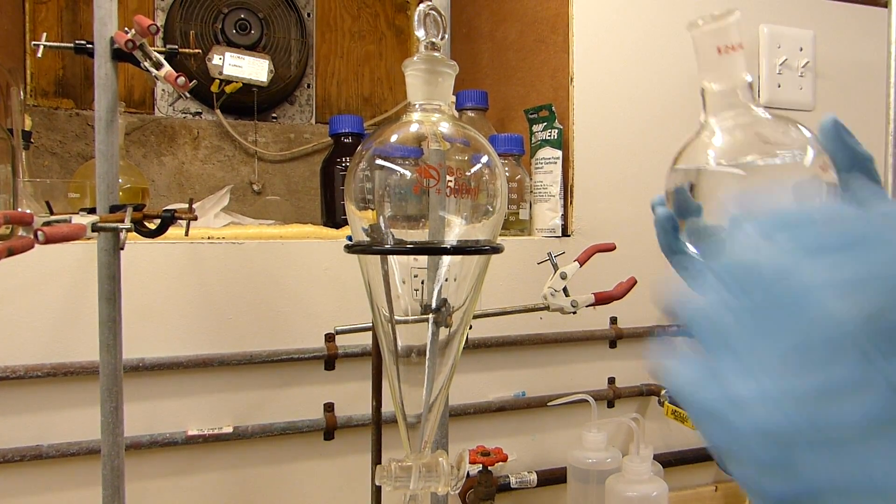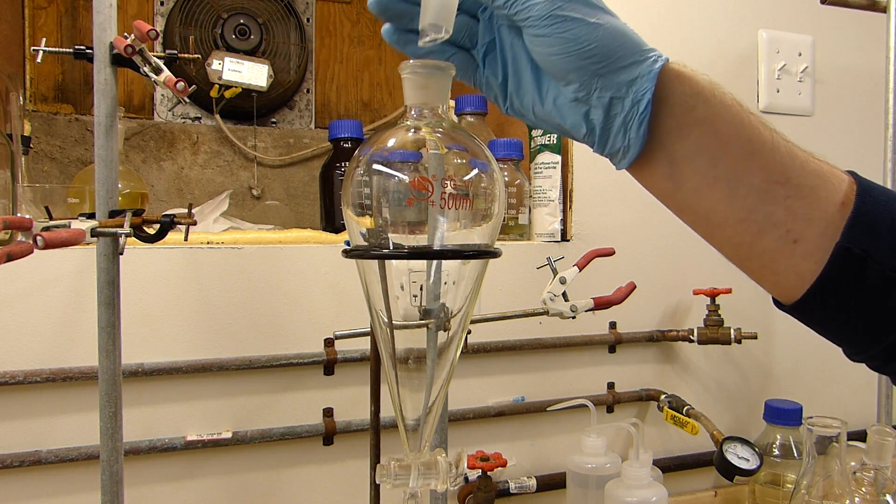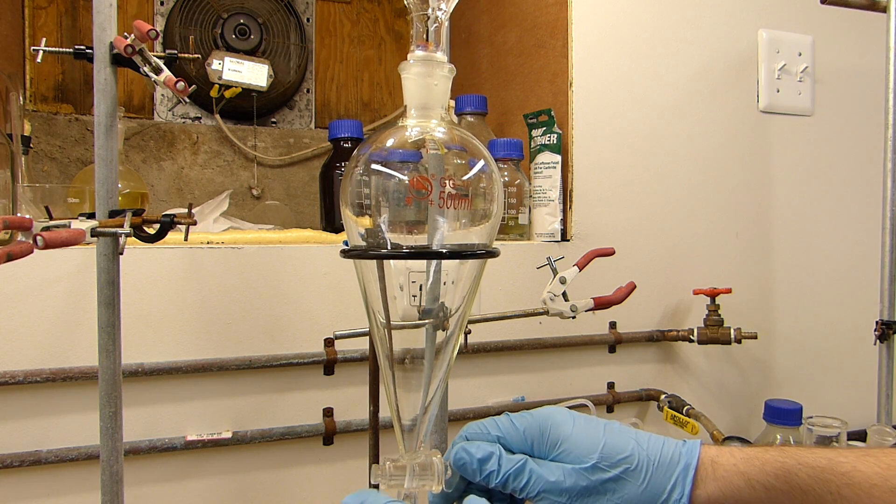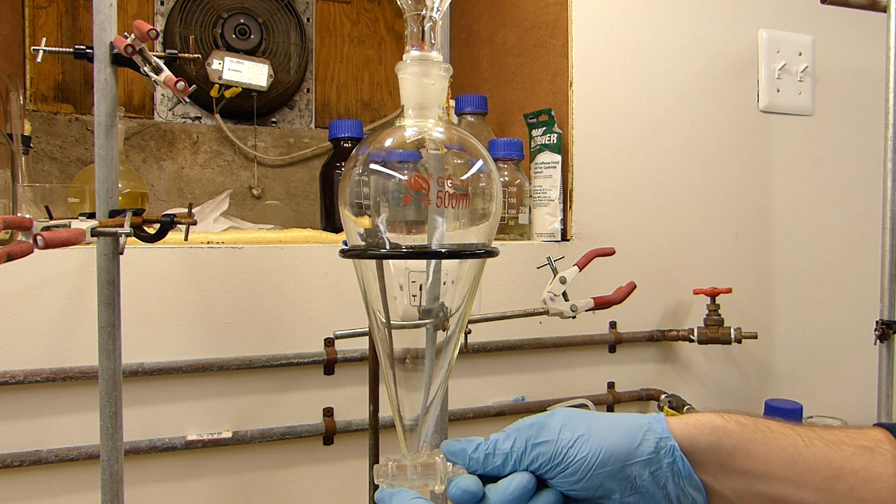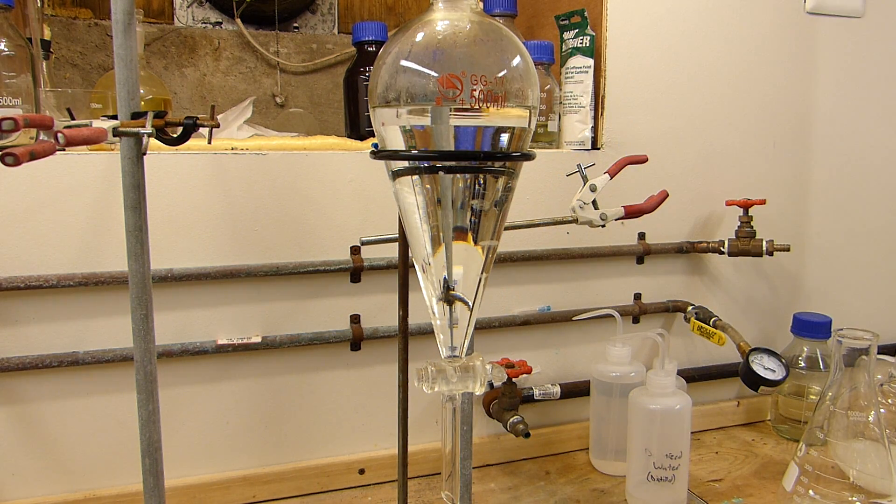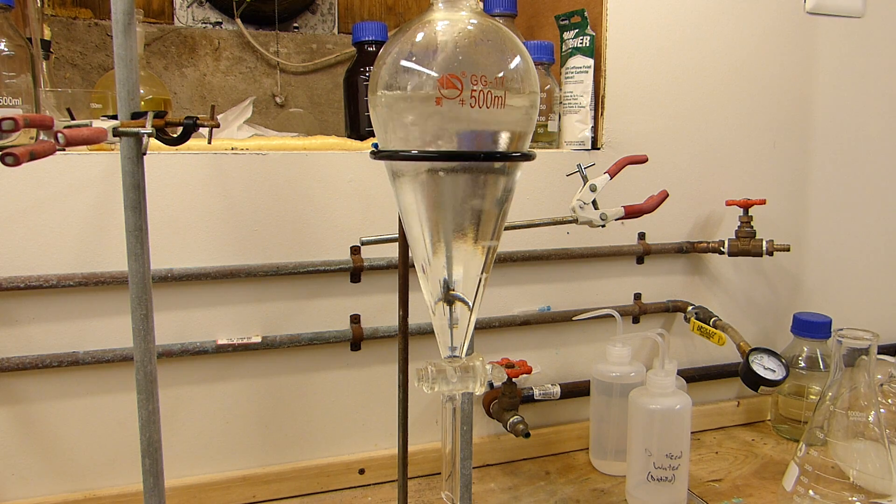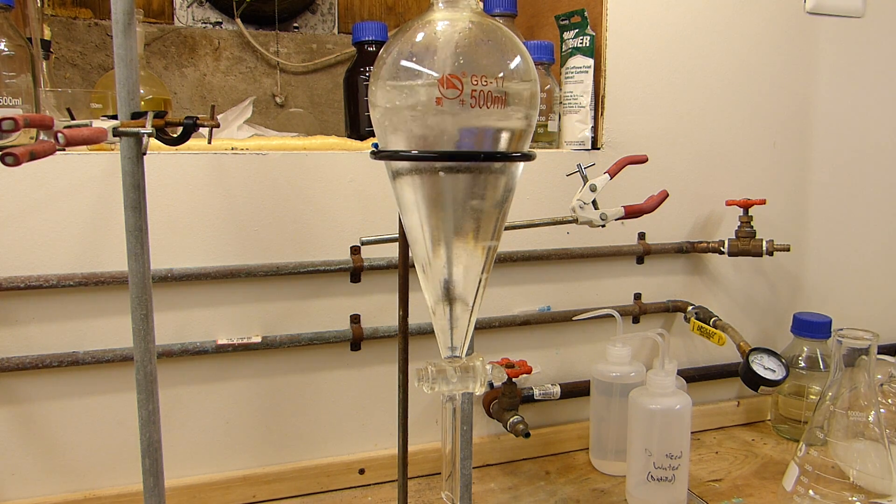So what I'm going to do essentially is just pour the dichloromethane into the funnel, making sure the stopcock is closed. Now I'll add a little bit of water and remember the water is going to act to absorb the methanol. So we'll get a good layer going there.